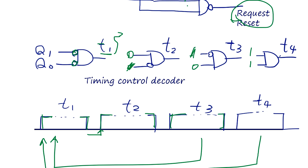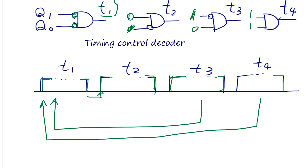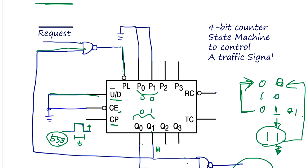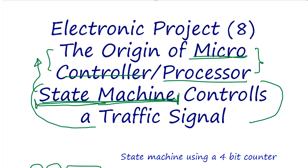So that's the state machine that controls a traffic signal. The next topic is I/O function of microcontroller.